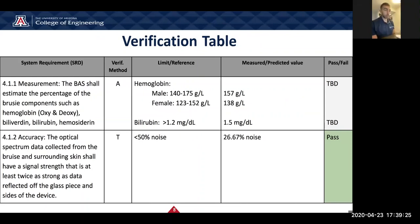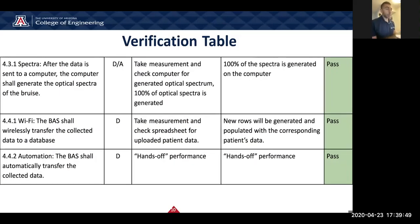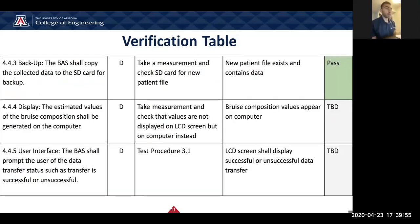For the verification table, we have passed most of our system requirements except for measurement, which is that the BAS shall estimate the percentage of each bruise component. We passed accuracy, reproducibility, identification, distinction, spectra, Wi-Fi, automation, and backup. We did not pass display, which requires the computer to display the composition of bruise components, and we did not pass user interface, which requires the BAS to indicate whether the transfer of data was successful or unsuccessful.